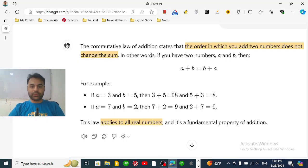What is commutative law of addition? This is a law in mathematics that states that the order in which you add two numbers does not matter.